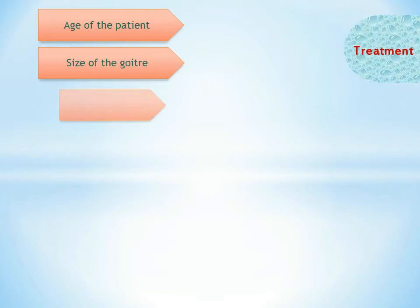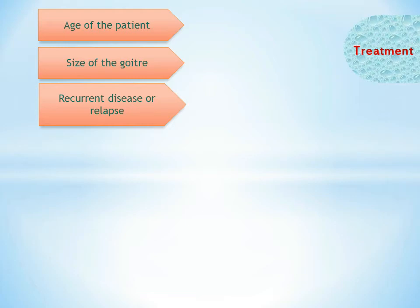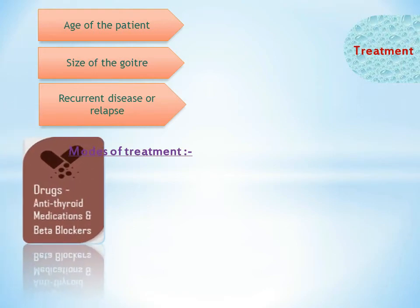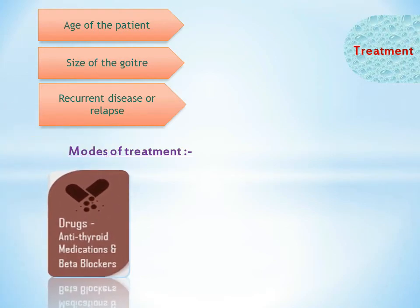Treatment of Graves disease: there are three modalities of treatment for hyperthyroidism. The choice depends on the age of the patient, the size of the goiter, and whether the disease is recurrent. Drug therapy uses antithyroid drugs and beta blockers. Antithyroid drugs are the initial treatment for all hyperthyroid patients. During pregnancy, the drug given is propylthiouracil. They are not to be given to lactating mothers, where carbamazole is given instead, or in cases of hypersensitivity.